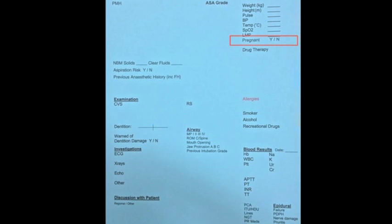Also, do ask about potential pregnancy in women of childbearing age, as some of our anaesthetic drugs may be harmful to the unborn child. I then move on to drug history. This can sometimes provide information about medical problems that may have been missed during previous questioning. It also allows us to identify any drugs that might influence our anaesthetic technique. For example, some antiplatelet agents are a contraindication to a spinal anaesthetic.